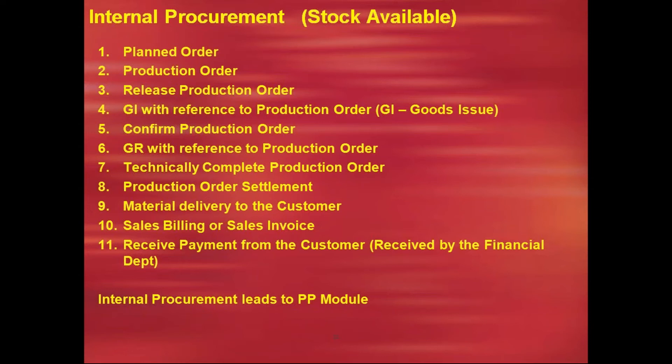The other case is stock available. The customer has placed an order and the company has stocks of the raw materials. Planning still takes place and the order is called a planned order. Since stocks are available, the company directly creates a production order, releases it, supplies raw materials from stores to the production department — goods issue — and the production department performs the production planning activities. The order is confirmed, goods receipt is done with reference to the production order, and the production order is technically completed and settled. Finally, stock is placed in the warehouse and quality is checked.